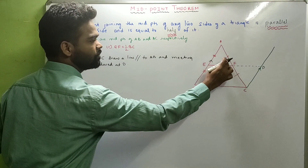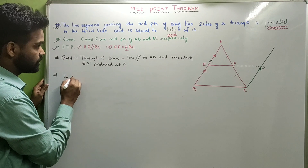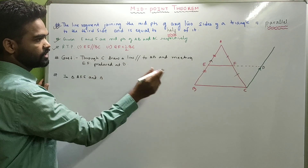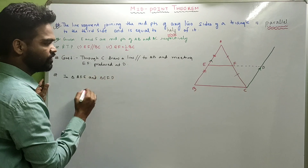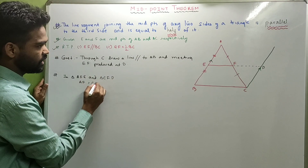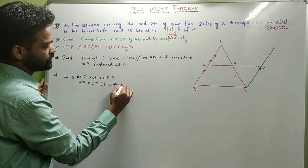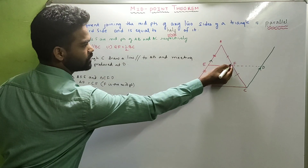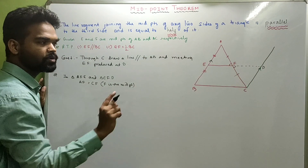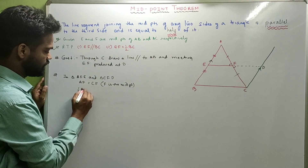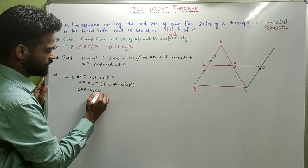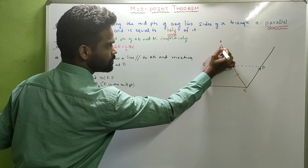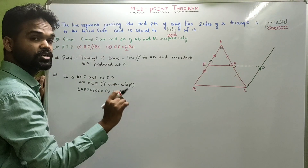Now look at these two triangles. I will try to prove them congruent. In triangle AFE and triangle CFD: AF is equal to CF. Why? Because F is the midpoint. Similarly, angle AFE is equal to angle CFD. Why? Vertically opposite angles. We need to write the reasons.